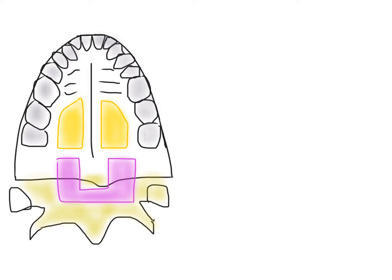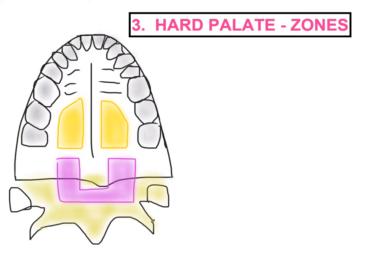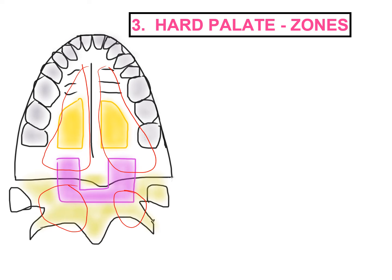The hard palate is a structure that is made of many bones. It is formed of the palatal shelves of the maxillary bone and the palatine bones in the back region. This hard palate bone is covered by a layer of soft tissue which is called palatal mucosa.